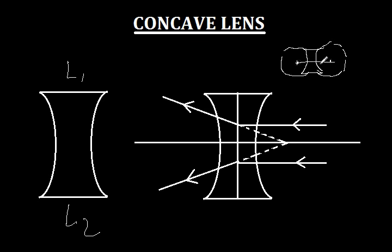When these centers of curvature are joined by a straight line, it is called the principal axis. The concave lens has only one principal axis, even though there are two centers of curvature. It is an infinite line.